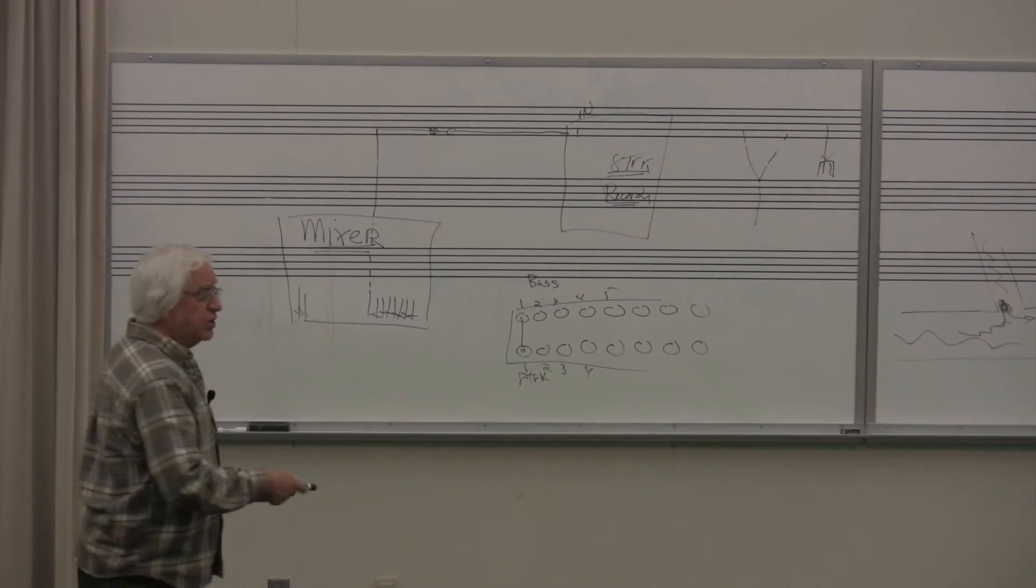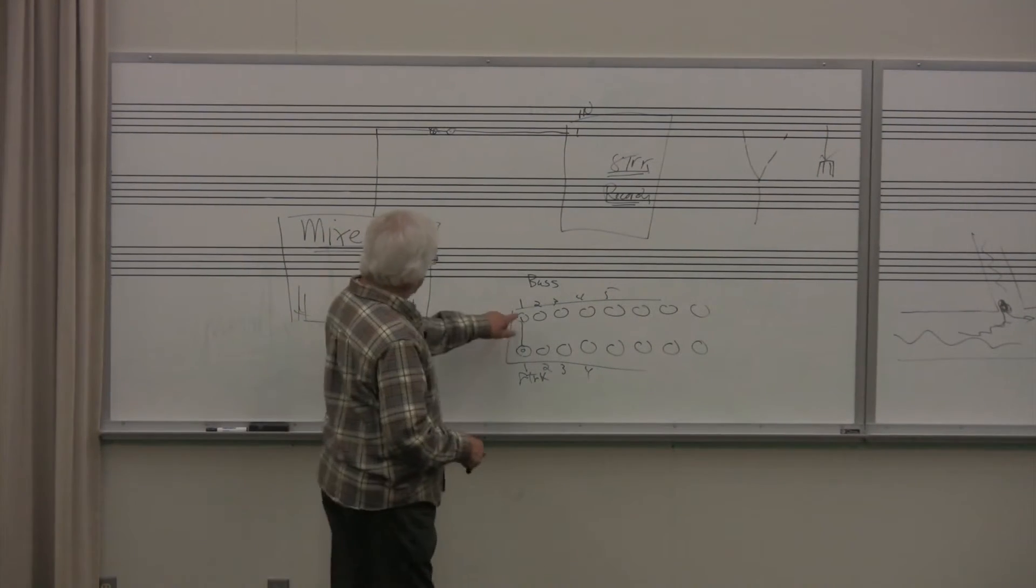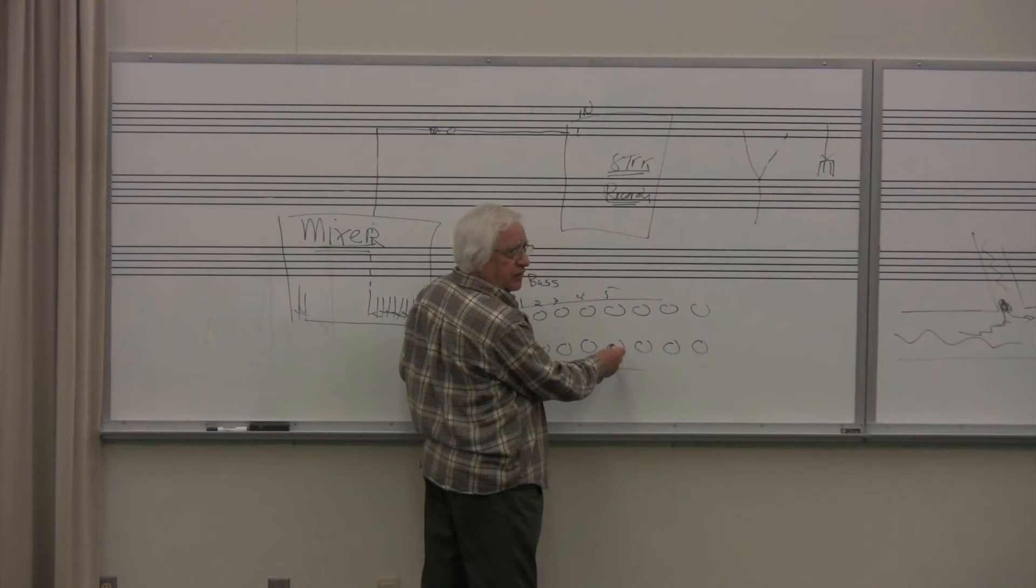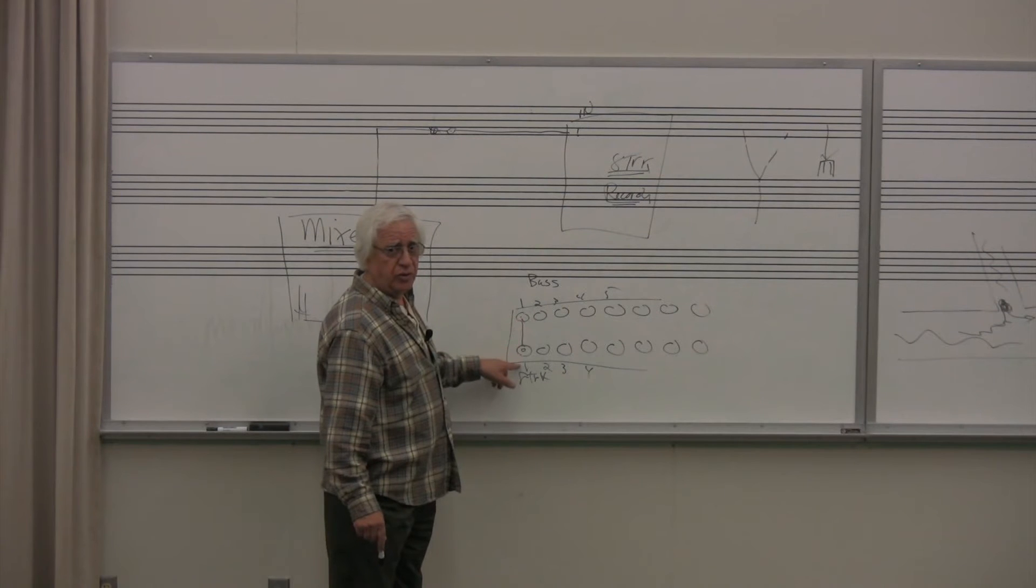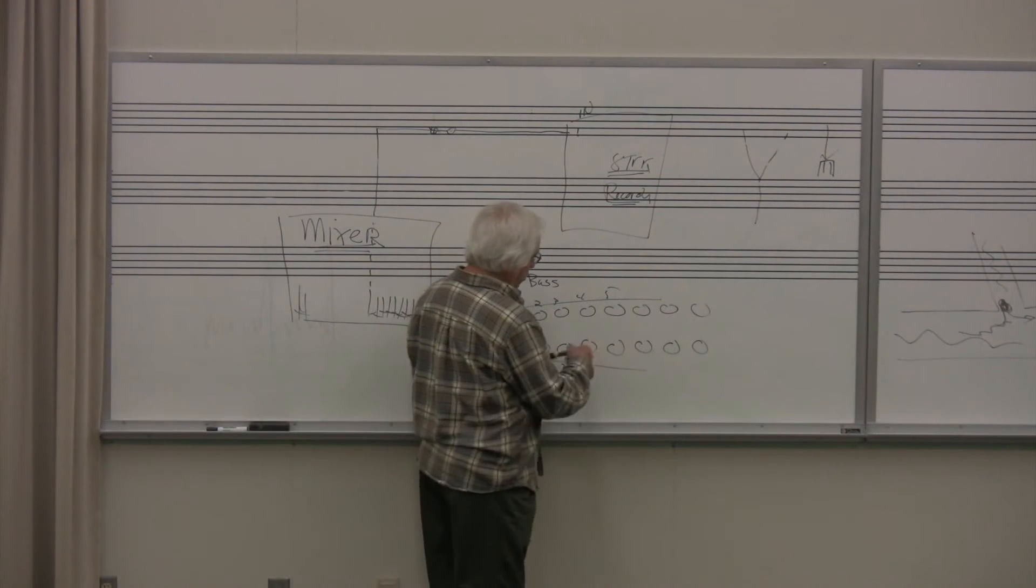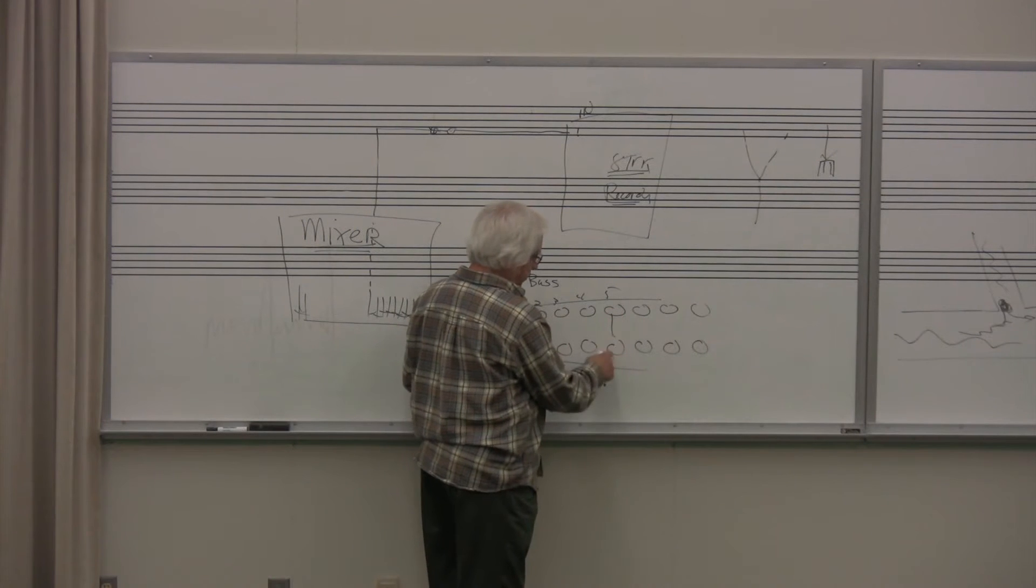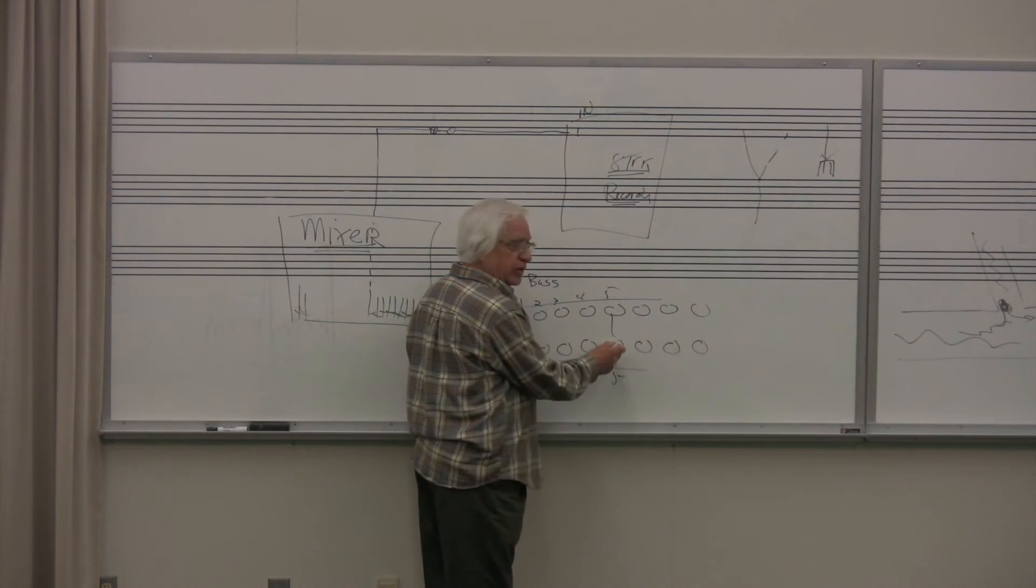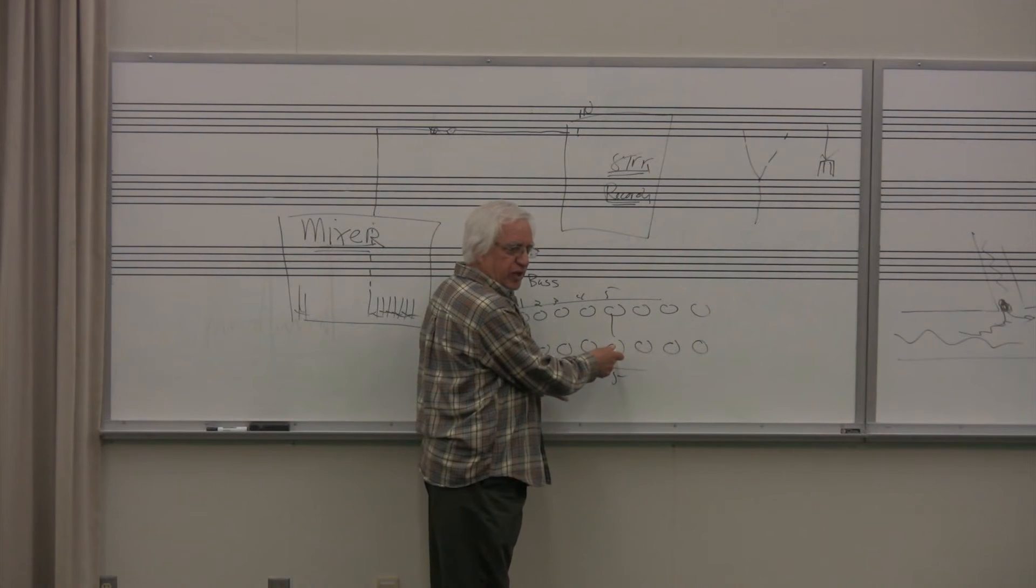It just goes through the patch bay automatically and goes there until I change my mind. Until I say, oh I want to take bus one out and I want to put it in track five in. Bus one out is still going to track one, but whatever was normal to five in is no longer going there, because once I plug this in it breaks the normal and replaces it with the new signal.